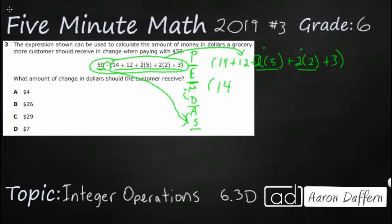We've got 14 plus 12, I'm just going to bring those down. Now, let's go ahead and take care of this multiplication first. 2 times 5, and it's a plus right there, so I'm just going to say plus 10.